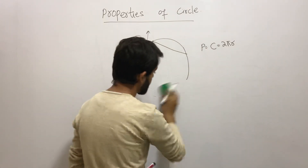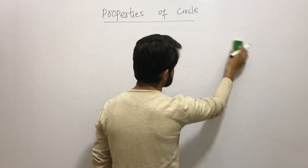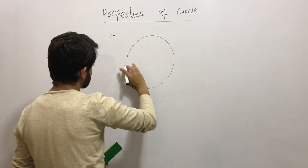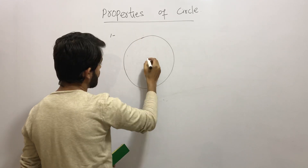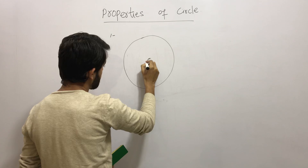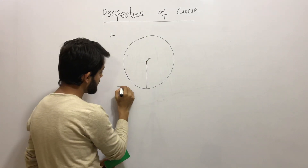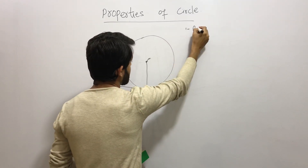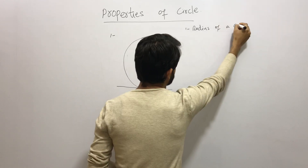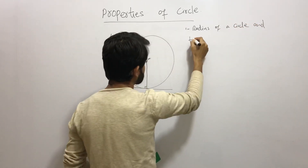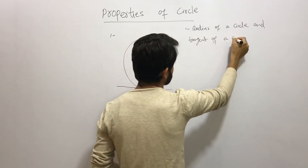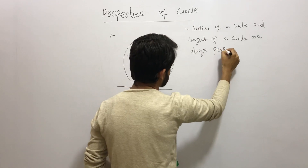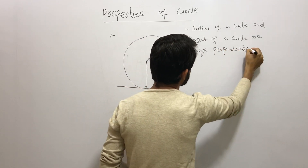From all these definitions we will now learn about the first property of a circle. The first property says that the radius and the tangent of a circle are always perpendicular to each other. So if this is your radius and this is the tangent, they will always be perpendicular.